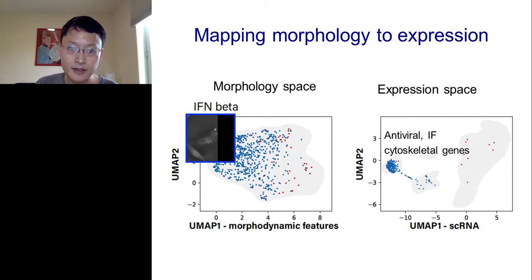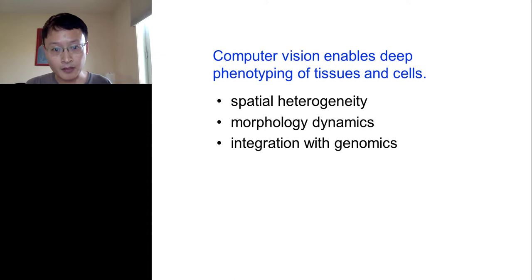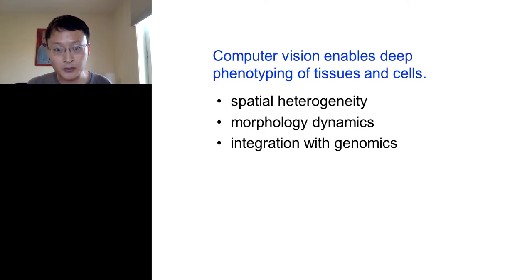I think that's really one of the exciting directions going forward — with these computer vision technologies, as we've seen in both examples, we can learn powerful features to represent the spatial and temporal dynamics of cells, and then we can connect that to rich information from expressions, either from spatial transcriptomics or from single cell RNA sequencing. Hopefully this talk gives you a couple of examples of how we can really take the recent advances of computer vision to learn about spatial heterogeneity of cells, to also learn about temporal morphological dynamics of cells, and really to integrate these ideas with powerful data readouts from high dimensional, high throughput genomics — especially promising and exciting as a way to really study human diseases with multiple modalities of data going forward.